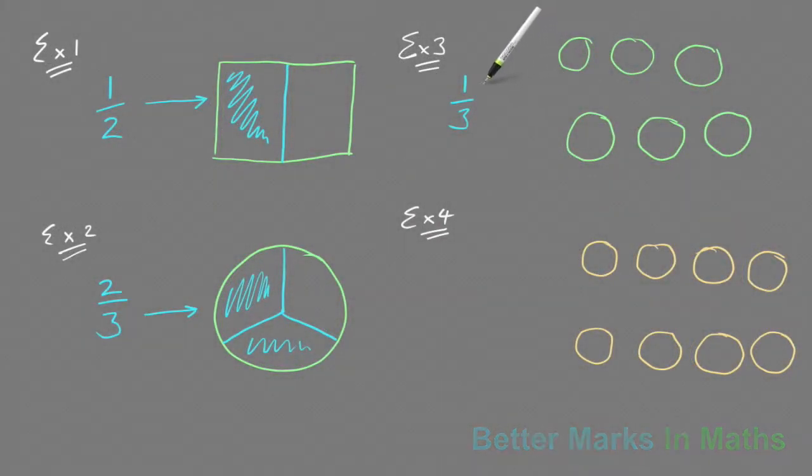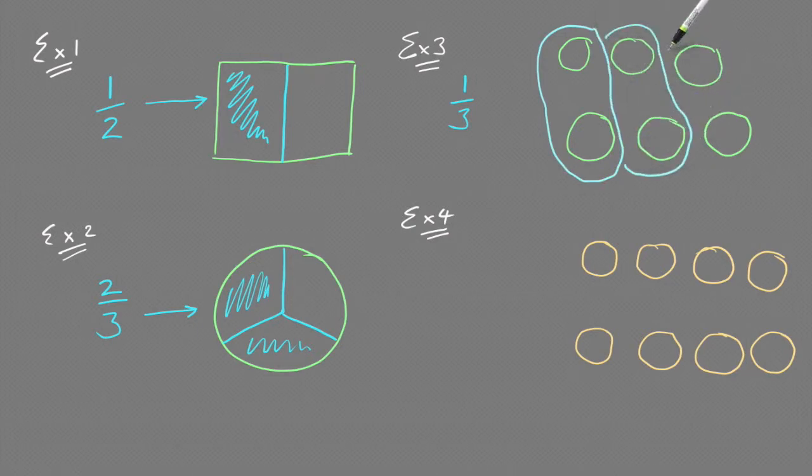In example 3, I want one-third of these six grapes. The 3 is telling me that I need to divide them into three equal groups, and that would mean I would need to put two grapes in each group, like such.